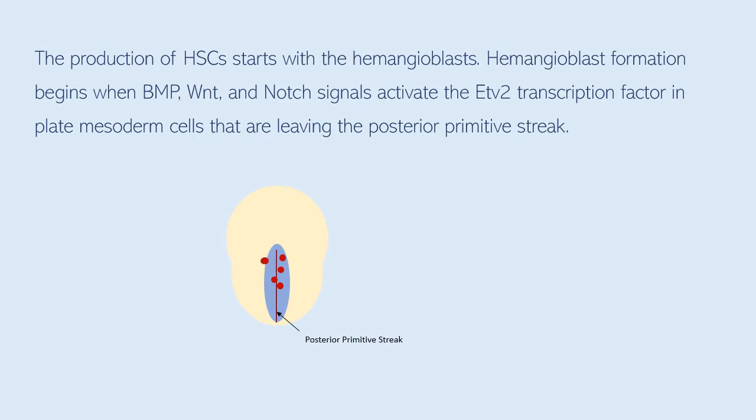The production of HSCs starts with the hemangioblast. Hemangioblast formation begins when BMP, WNT, and Notch signals activate the ETV2 transcription factor in plate mesoderm cells that are leaving the posterior primitive streak.